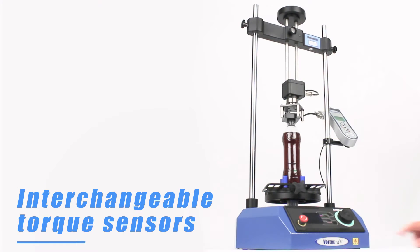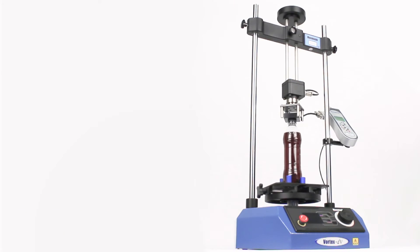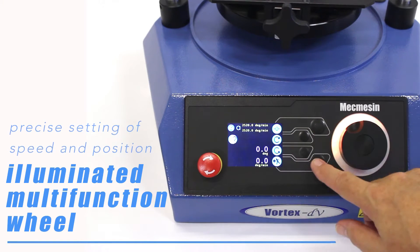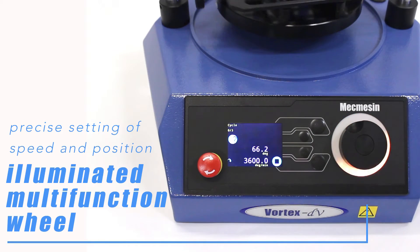Torque is measured by one of four interchangeable torque sensors which the AFTI display can show in either metric or imperial units as you require. The illuminated multifunction wheel is used for precise setting of speed and position. It's also used to accurately adjust the position of the sample before testing begins.